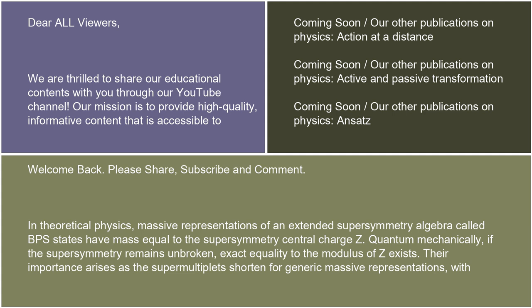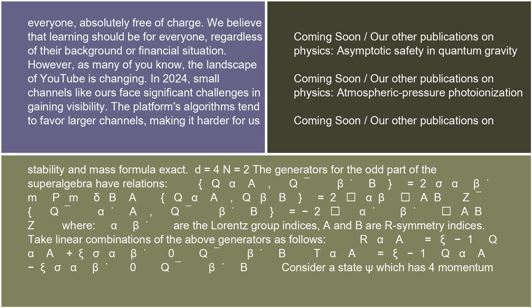In theoretical physics, massive representations of an extended supersymmetry algebra called BPS states have mass equal to the supersymmetry's central charge z. Quantum mechanically, if the supersymmetry remains unbroken, exact equality to the modulus of z exists. Their importance arises as the supermultiplets shorten for generic massive representations, with stability and mass formula exact.